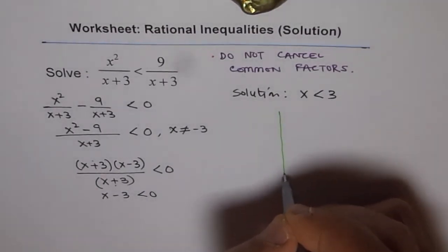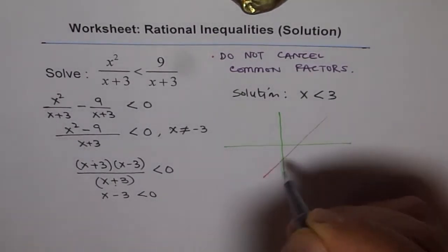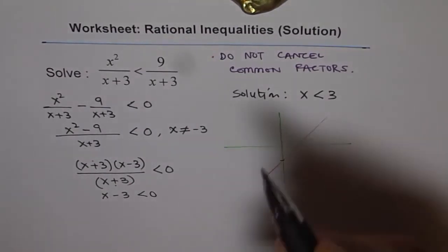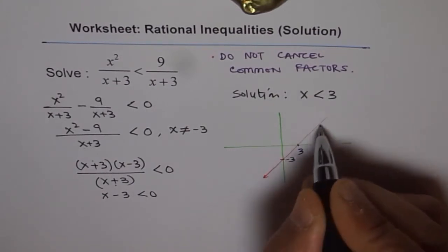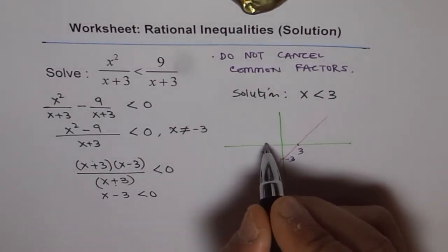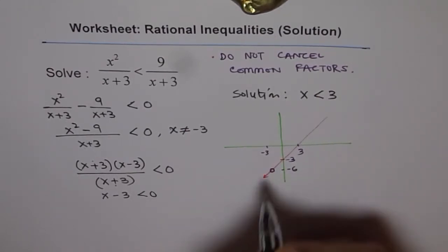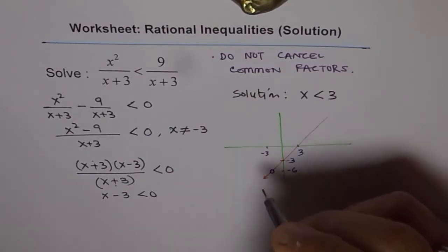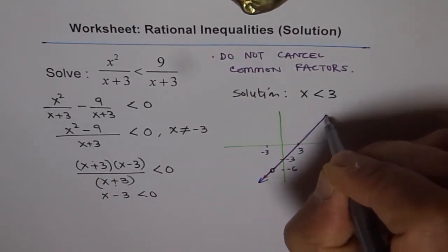We can draw this to show the answer visually. The function reduces to x minus 3, which is a line. The y-intercept is minus 3 — putting x equals 0 gives minus 3. The function equals 0 when x equals 3. The restriction that x cannot equal minus 3 means there is a hole on the line at that point, which corresponds to a y-value of minus 6. That is your sketch of the rational function.